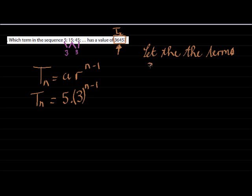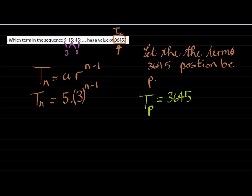Let the term 3645's position be p. So Tp is 3645, and that happens if I'm at the pth position. If I substitute a p into this formula, I'll get 3645. Now I need to solve for p.